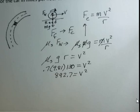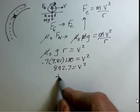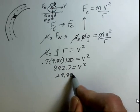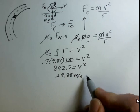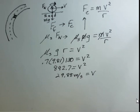Take a square root of both sides, and I found 29.88 meters per second, standard metric units. That's our speed for the car.